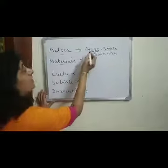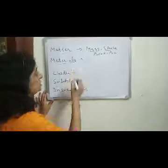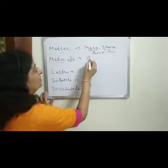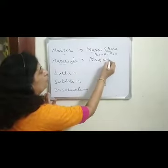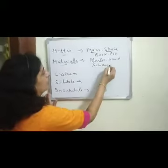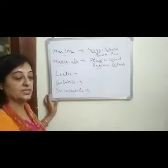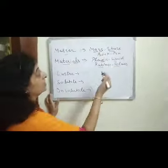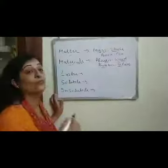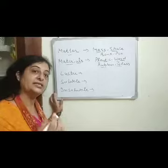Materials: the matter of which an object is made is called materials. For example, plastic, wood, rubber, and glass are examples of materials. For instance, a duster is an object which is made up of the material wood. So materials are the substances from which an object is made.